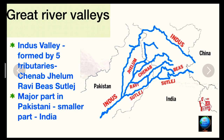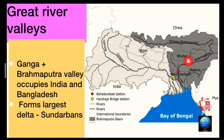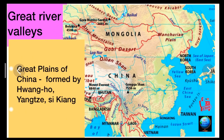The Ganga and Brahmaputra Valley occupies large areas mainly in India and Bangladesh. This plain has been formed by the Ganga and Brahmaputra rivers and their numerous tributaries. They form the largest delta in the world, called the Sundarbans delta.